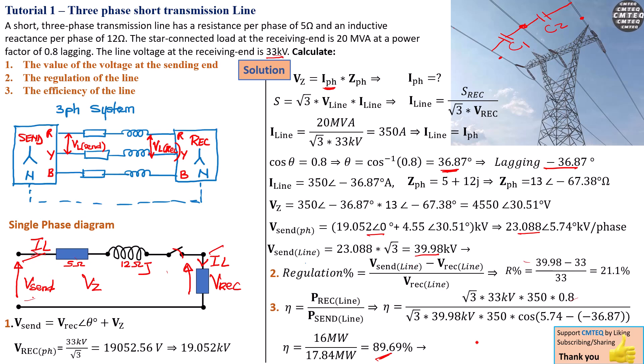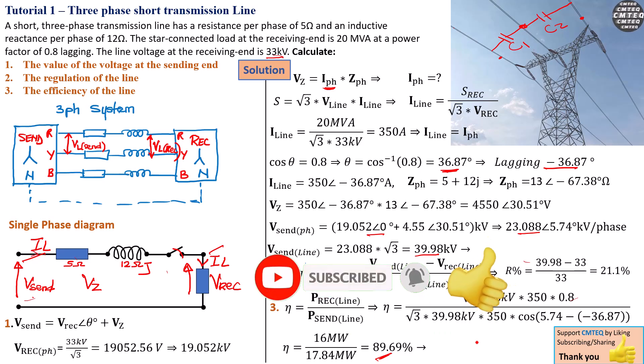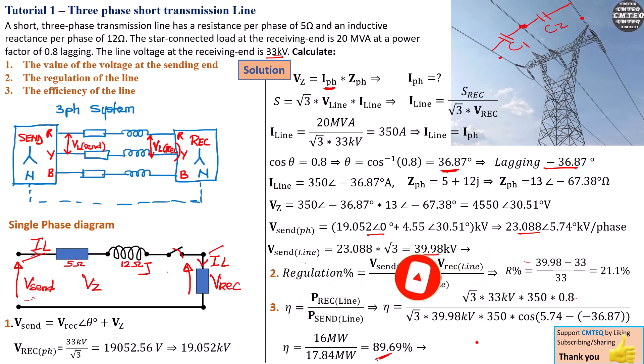This is a very typical and simple example. There are ways certain questions can be framed differently, and if you understand how all these parameters interact based on the phasor diagram, you will get it. Stay tuned for the next tutorial where we'll be doing more advanced topics. Until next time, cheers.